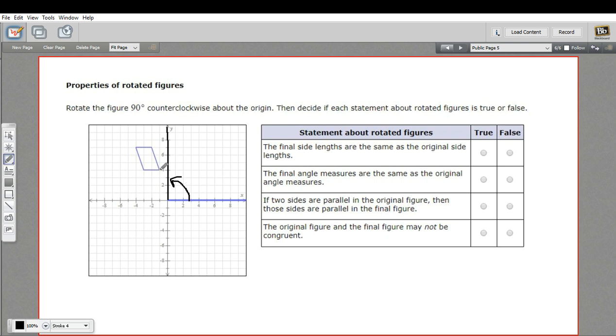When you rotate a figure 90 degrees, the X and the Y sort of flip-flop. So we have negative 1 and 4. So this is going to be negative 4 and negative 1. And then this point is negative 2, 7. So we're going to have negative 7, 2, negative 2.